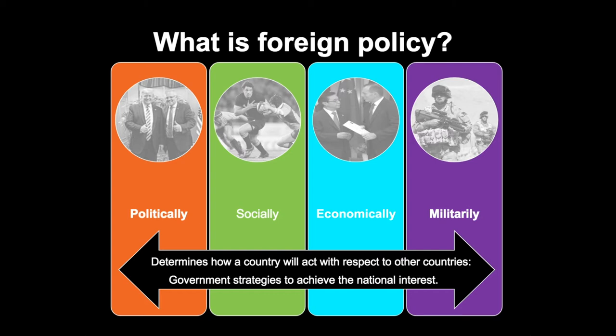These interactions take the form of political relations where heads of government and ministers engage publicly on a number of important issues. Australia also furthers its interests through social interactions with our important international partners. We particularly like sporting events, but also through the arts and other events. We also interact through trade and investment and through military cooperation, alliances and joint exercises.